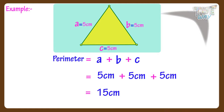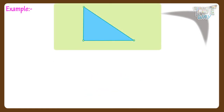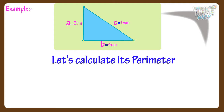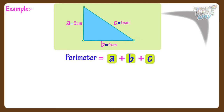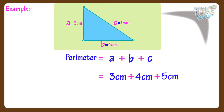Now let's take another example. Here we have a scalene triangle with the lengths of all sides mentioned. Now let's calculate its perimeter. We know perimeter equals A plus B plus C, where A, B and C are the lengths of the sides of the triangle. And here the lengths of sides are 3, 4 and 5. So perimeter equals 3 plus 4 plus 5, which equals 12 centimeters.